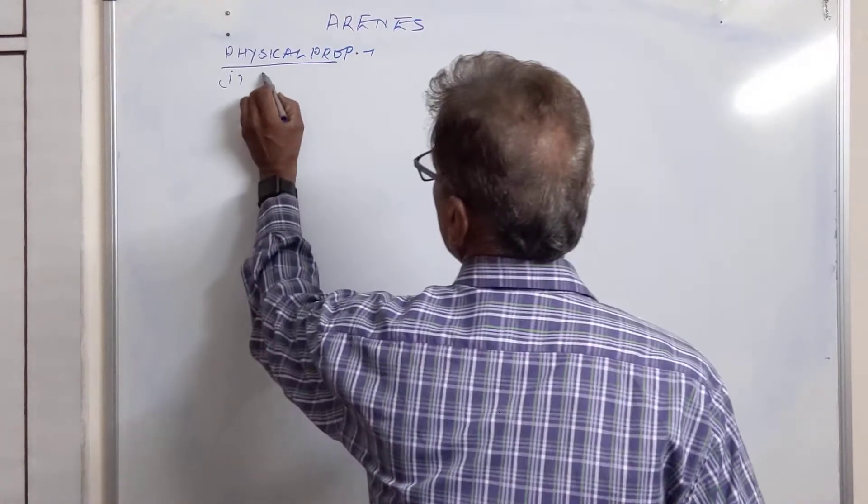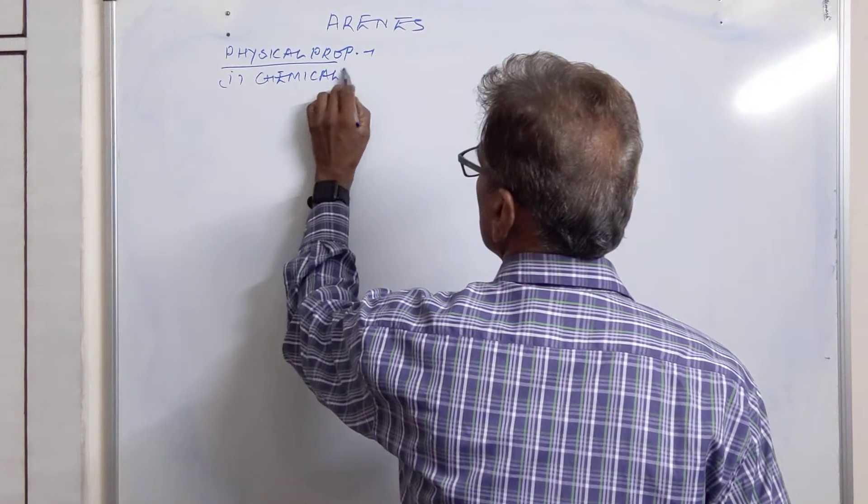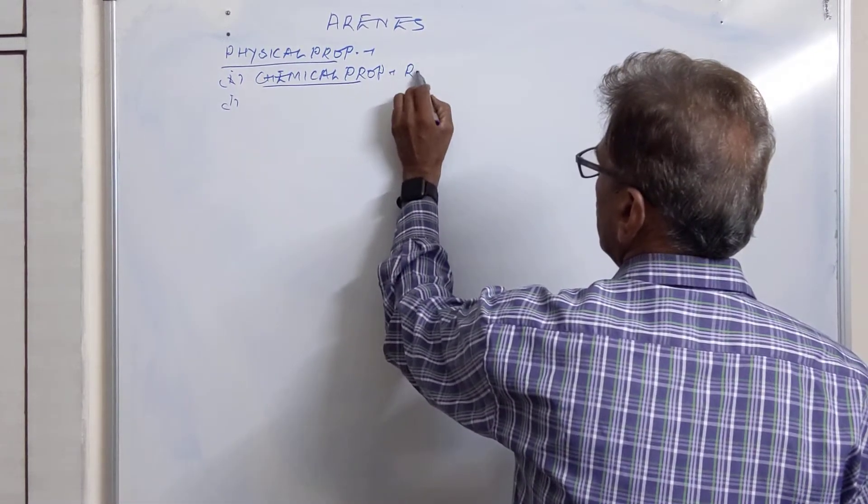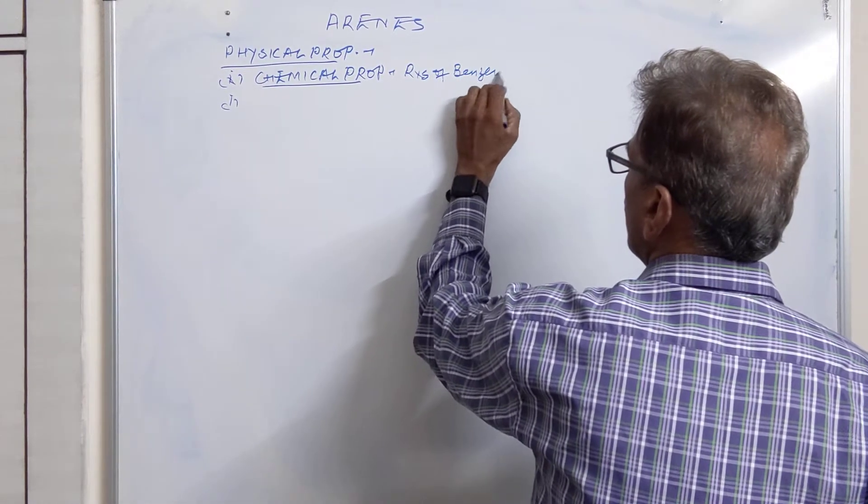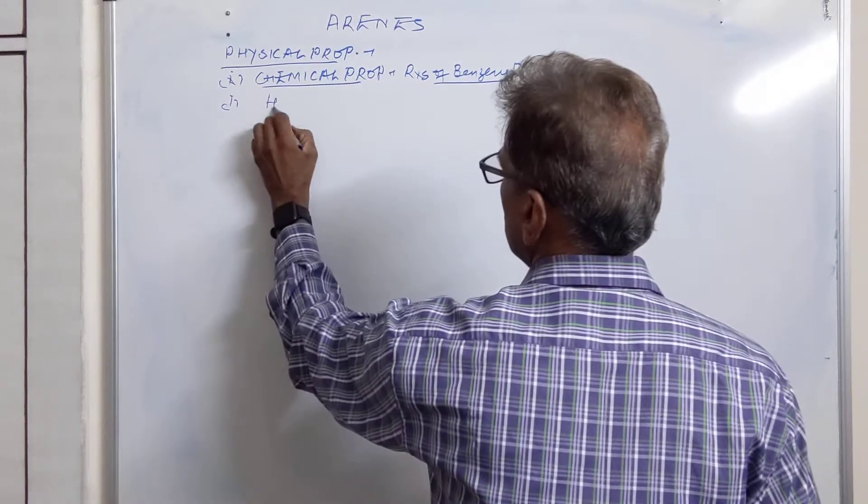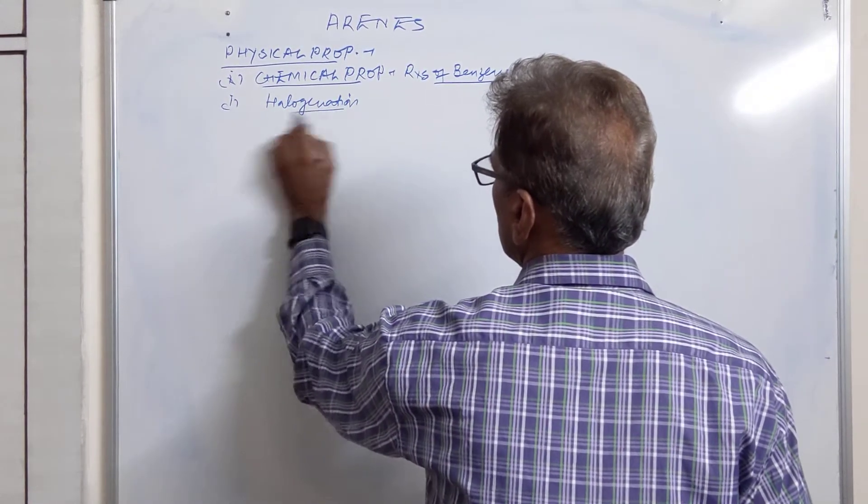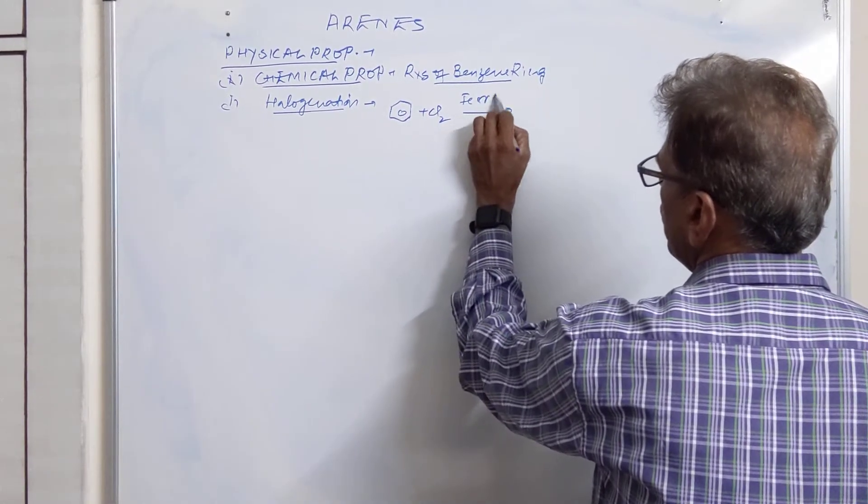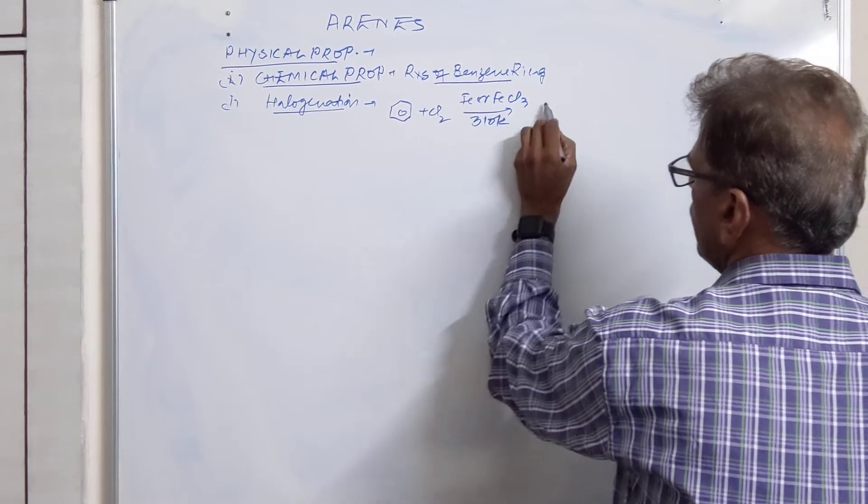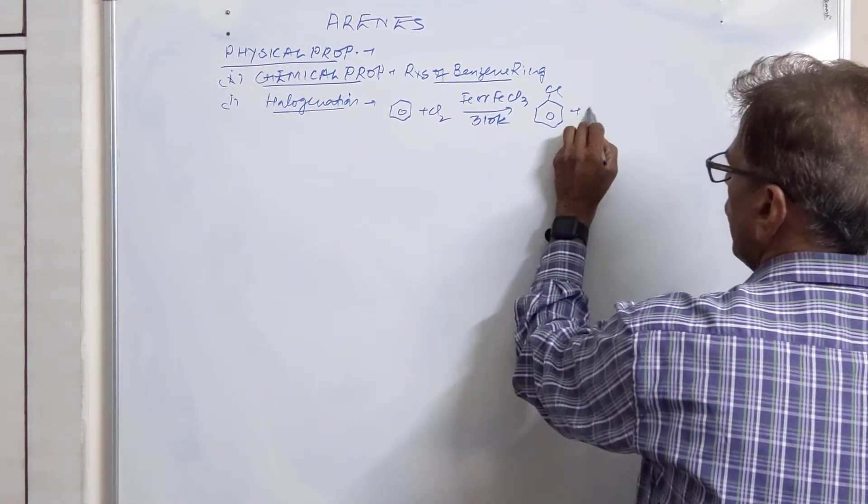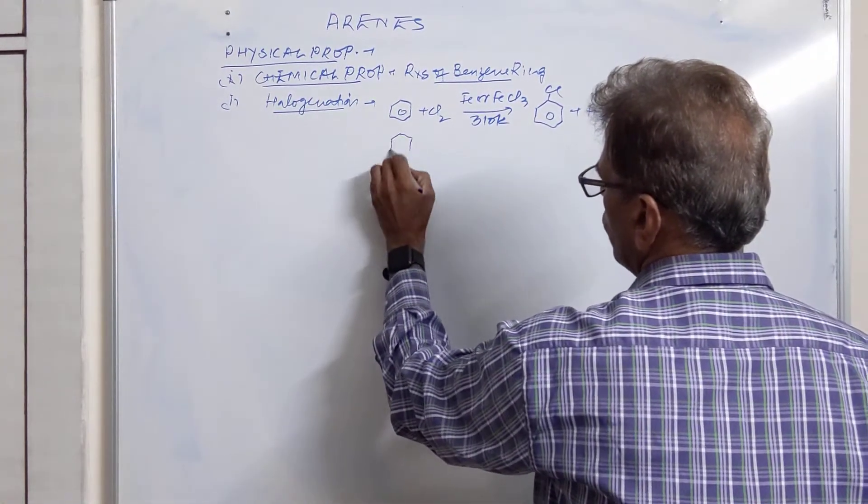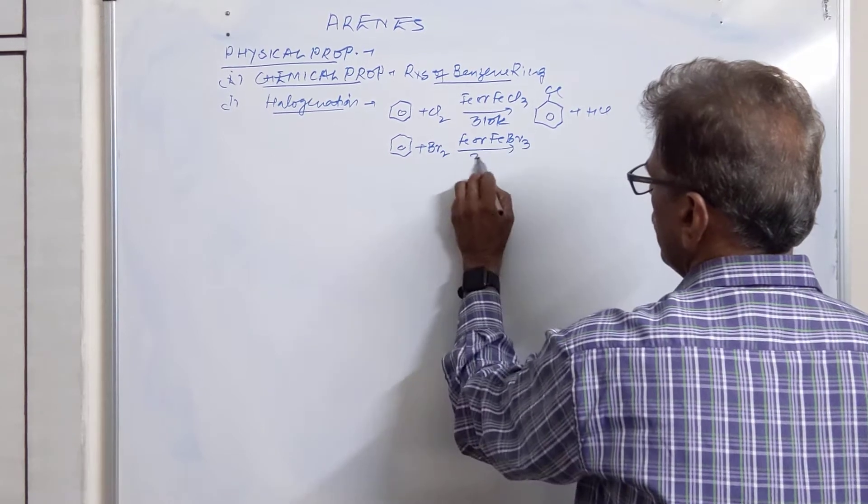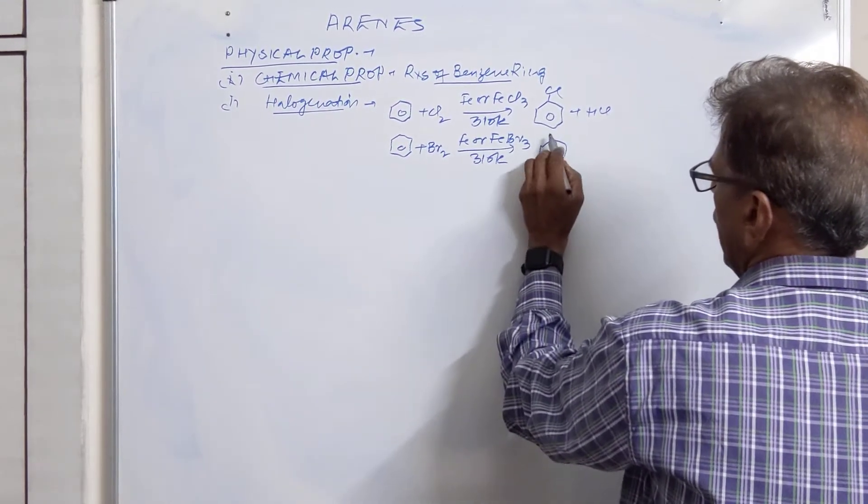Then we come to the chemical properties. First we will be studying the reactions of the ring. First is halogenation. Benzene combined with Cl₂ in the presence of Fe or FeCl₃ at 310 Kelvin gives chlorobenzene and HCl. It can also combine with bromine in the presence of Fe or FeBr₃. This reaction we have done in the preparation of aryl halides.